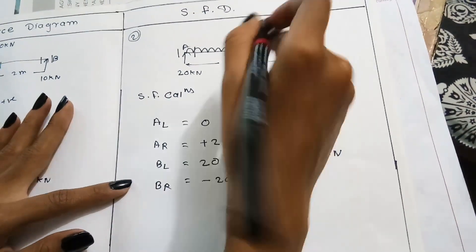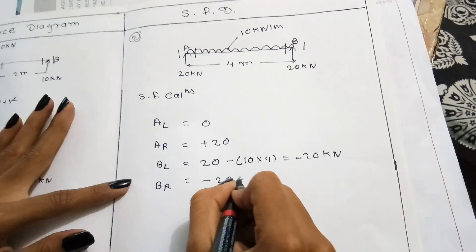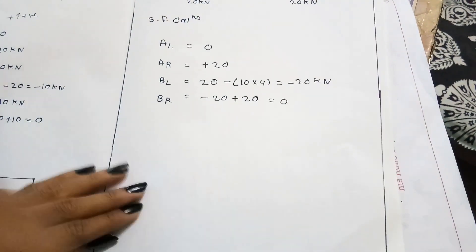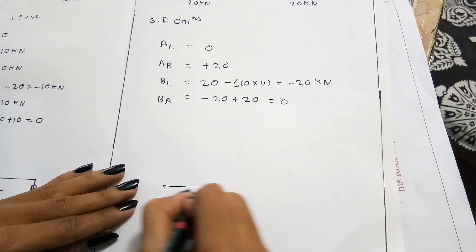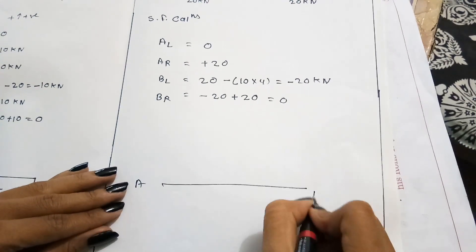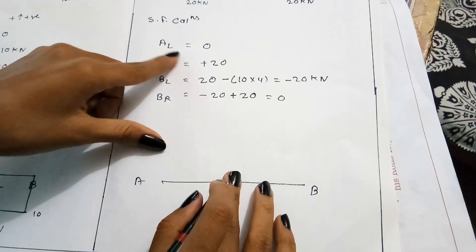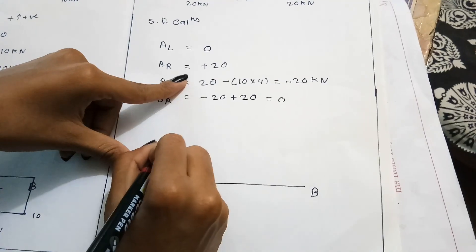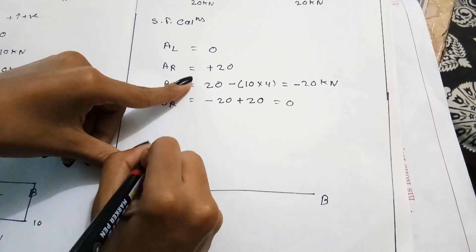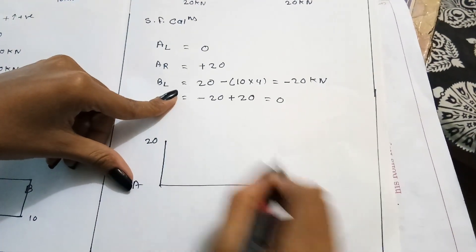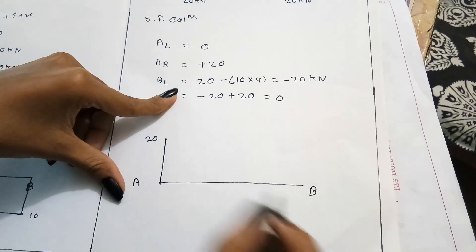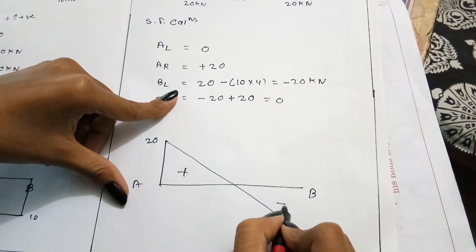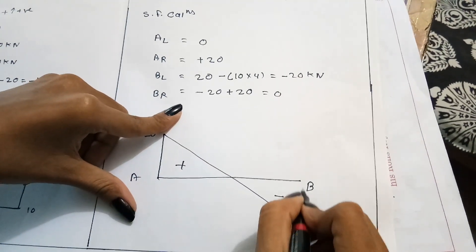At B-right, the calculation is: minus 20 plus 20 equals 0, so B-right equals 0. Drawing the SFD: along the AB baseline, A-left is 0, A-right is 20 kN. B-left is minus 20 kN — this side is plus and this side is minus. Then B-right returns to 0.